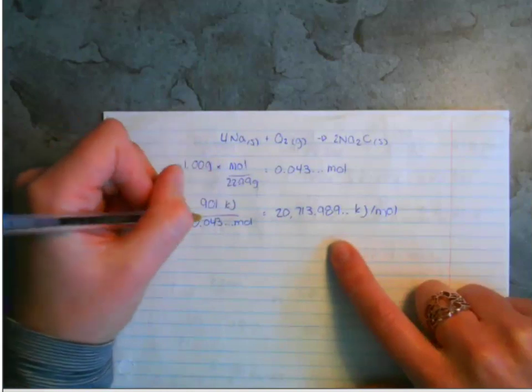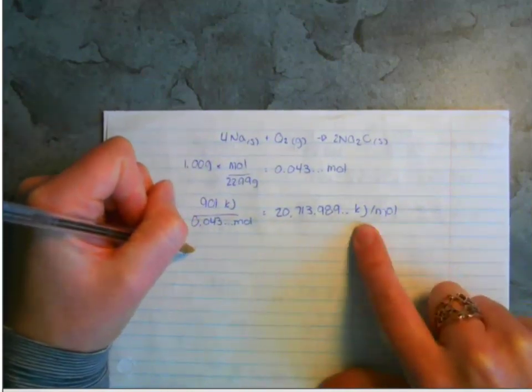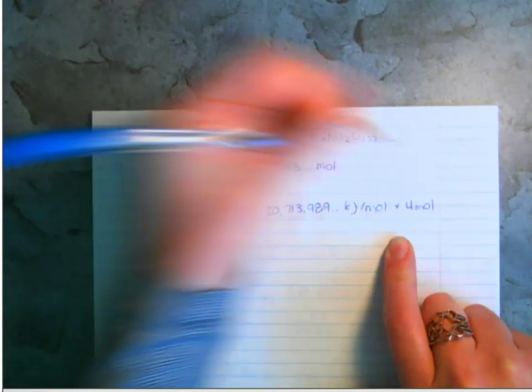If this is the number of kilojoules per mole, then we just want to multiply it by the number of moles that are represented in the reaction, which is four.